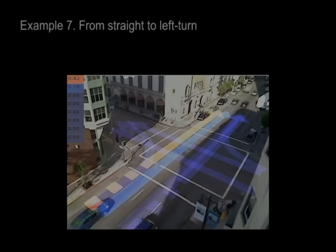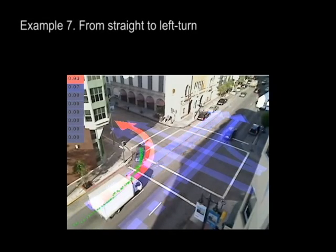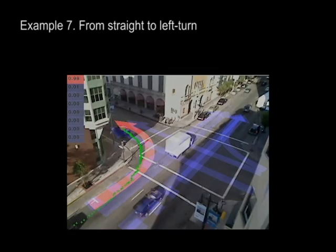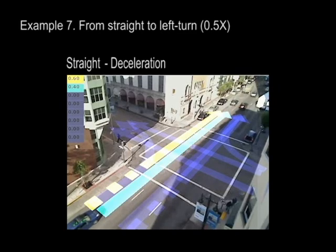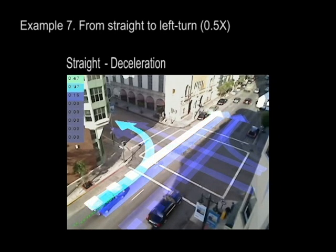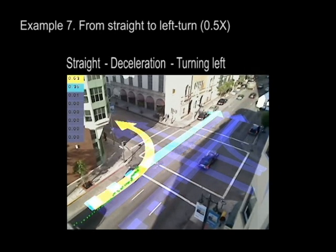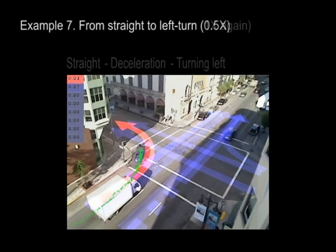The next example shows a car slowing down and turning left. Our prediction starts as straight. As the car decelerates, a stopping pattern becomes dominant. Finally, as the car begins to turn, the left turn prediction becomes dominant. We see that our approach is quick in responding to subtle transitions.